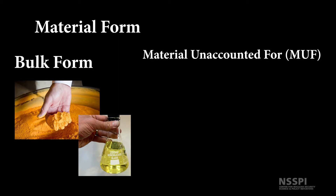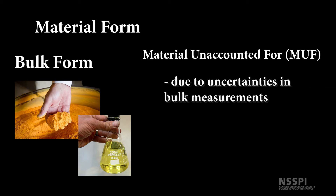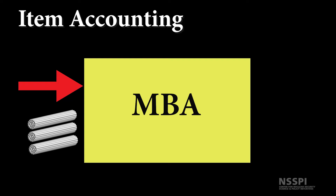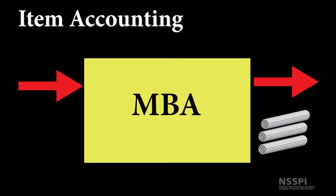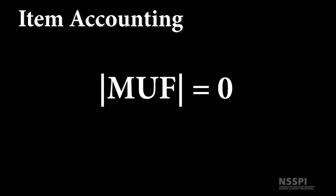Bulk form material measurements can result in material unaccounted for, or MUF. This MUF is partially due to uncertainties in bulk measurements — things like weight, enrichment, flow rate, and so forth — when compared to counting in the case of item type nuclear materials such as fuel bundles. For instance, when we have three fuel bundles going into an MBA, we should be able to count those same three fuel bundles coming back out. A non-zero MUF for item accountancy would indicate a problem.